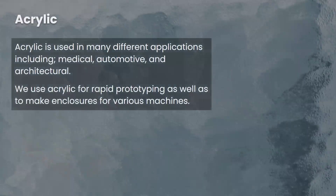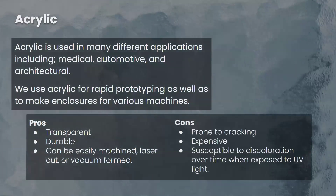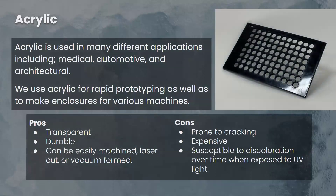The material we primarily cut on the laser cutter is acrylic, which has widespread use in medical, automotive, and architectural fields because it's quite stable and durable. We use it for rapid prototyping of small parts — for example, the clamping plates for our auto punch machine were all prototyped in acrylic before being made in aluminum, due to the time difference between the two. This acrylic isn't transparent but some is. It's incredibly strong and easy to work with, however it can crack quite easily and is fairly expensive.